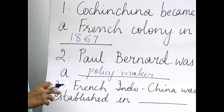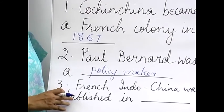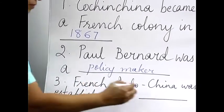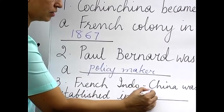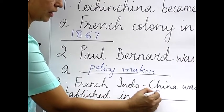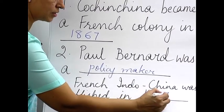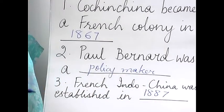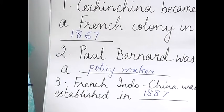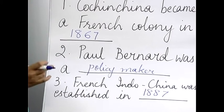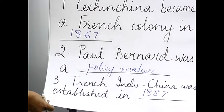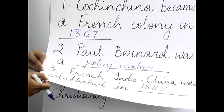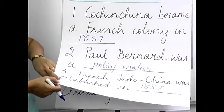The French Indochina was established in 1887. The question can come as: when was French Indochina established?